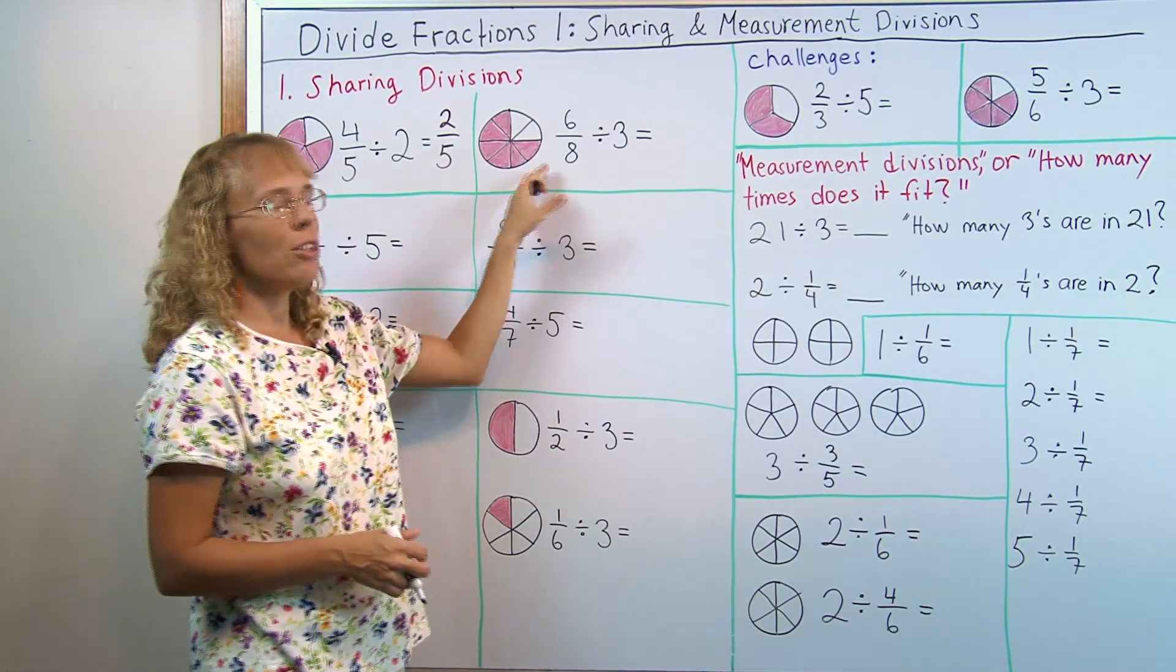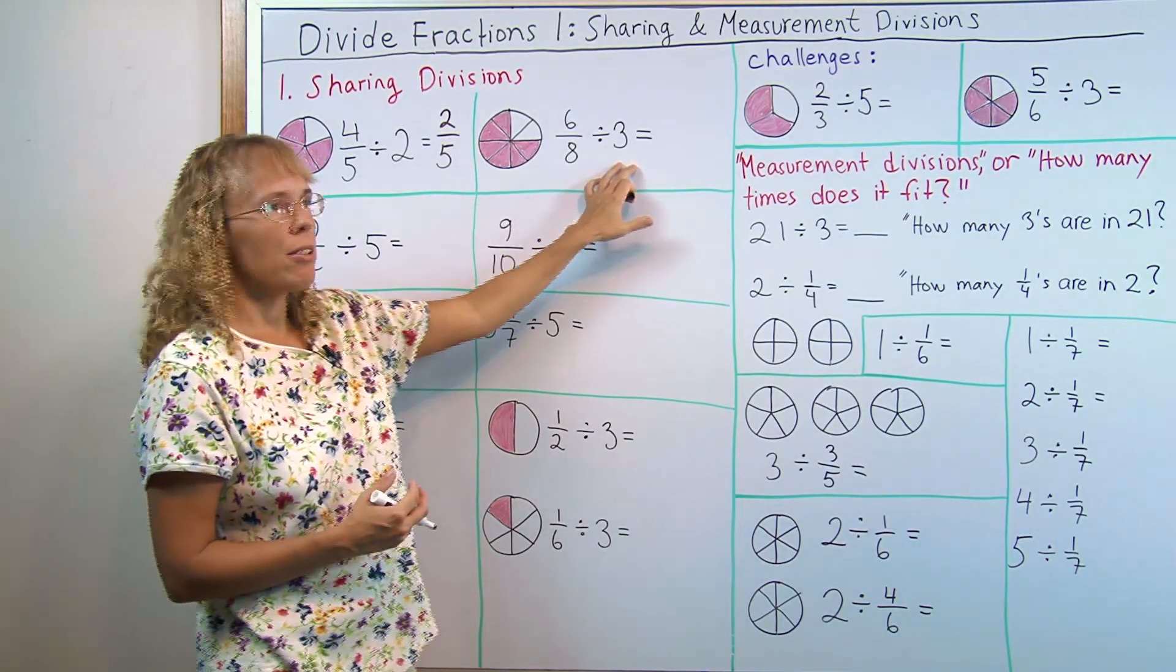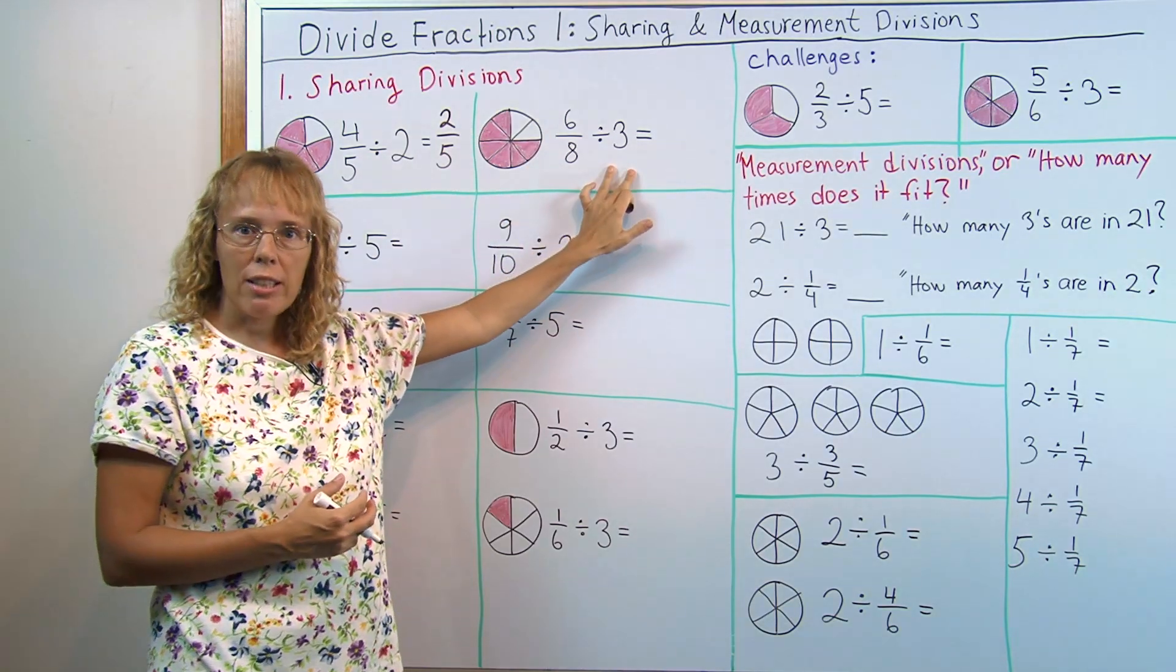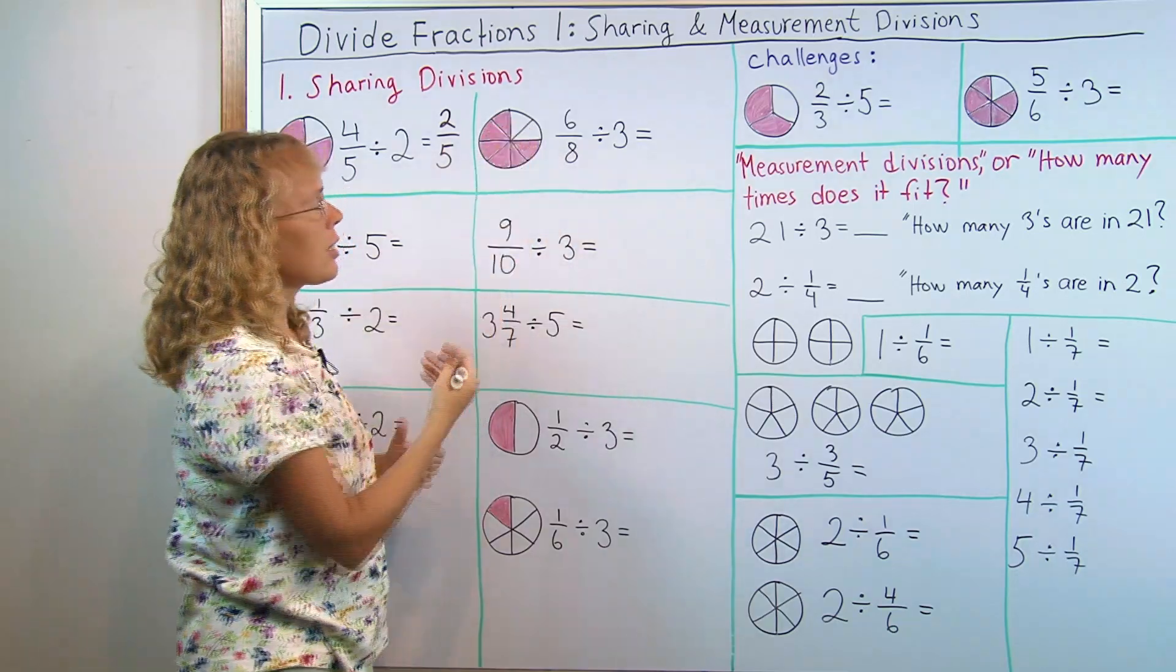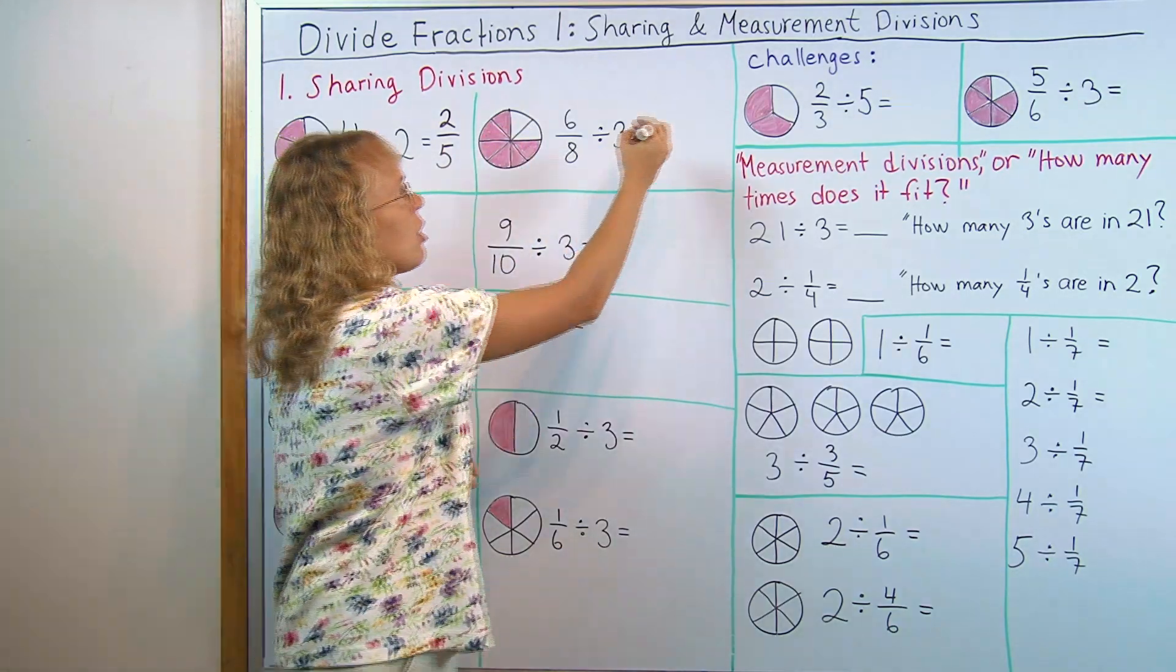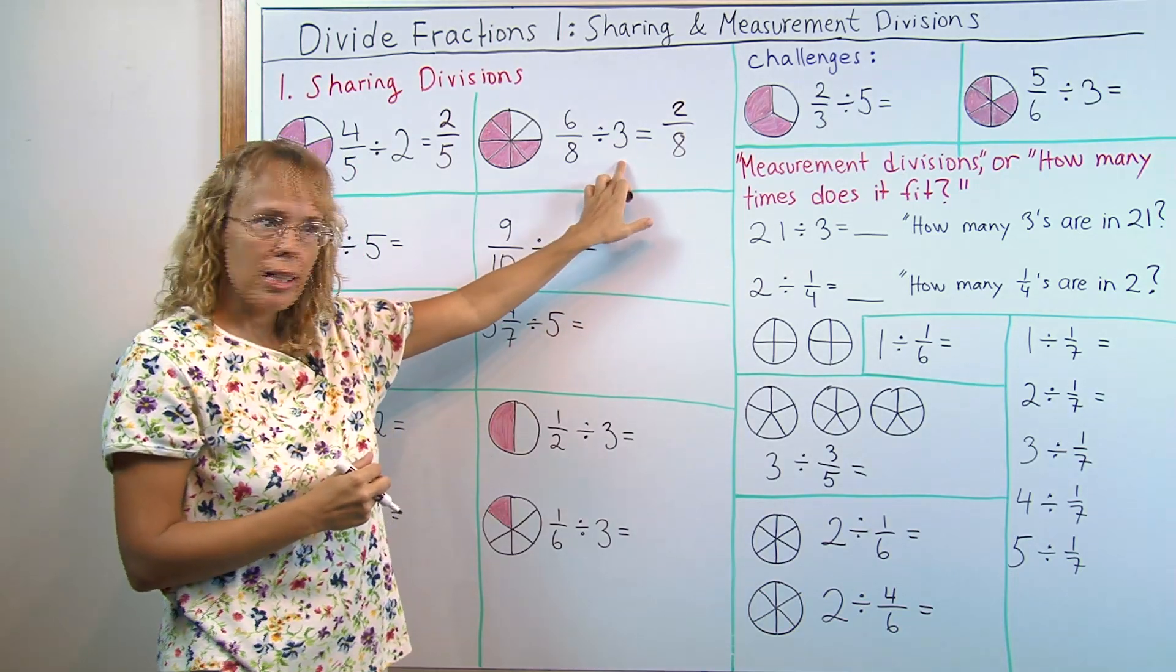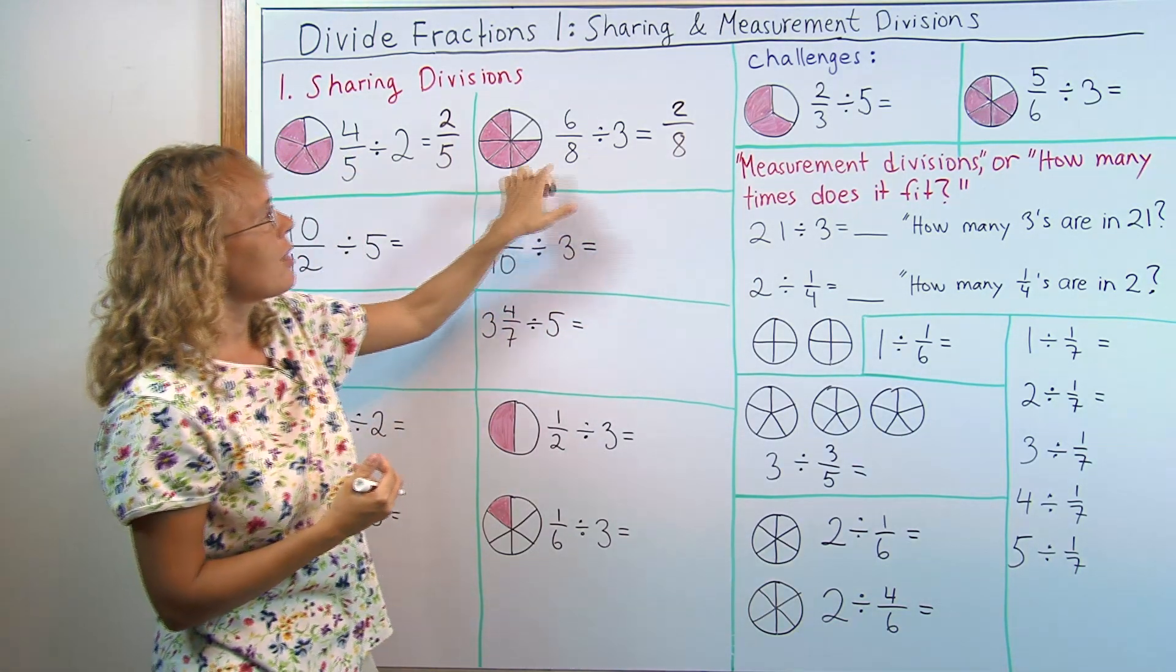Another example: six-eighths divided by three and there's a picture. We have this much pizza left and three people are sharing it. How much does each person get? Each person gets two-eighths, two slices. Again you can check it by multiplying. Two-eighths times three equals this. You just go backwards this way and multiply.